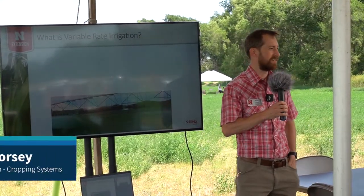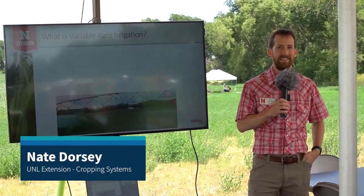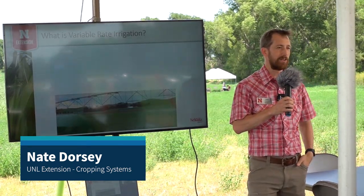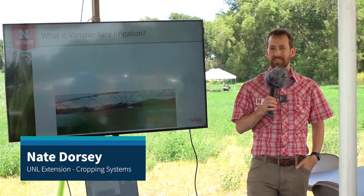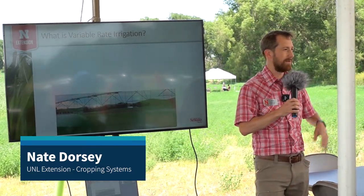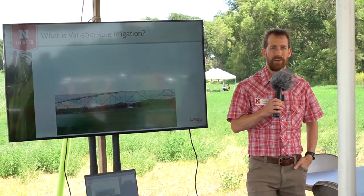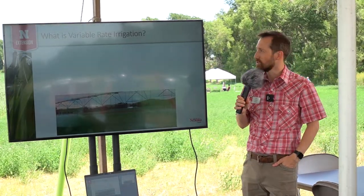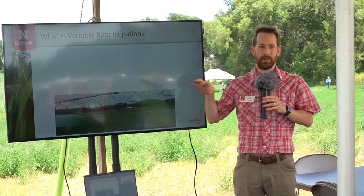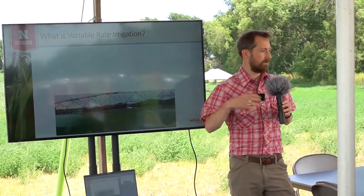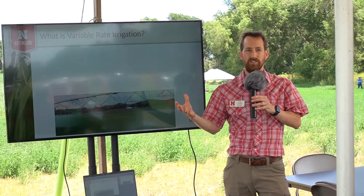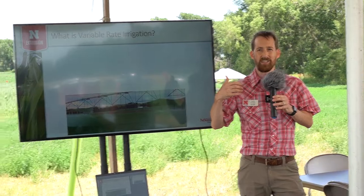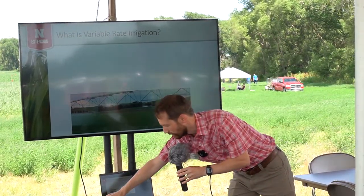My name is Nate Dorsey. I'm an Extension Educator with the University of Nebraska, based in Fremont, covering both Dodge and Washington County. I have a background working in irrigation technology, so variable rate irrigation is right up my alley — something I've worked with quite a bit over the years. I'm excited to talk about how we can use remote sensing and drones to generate variable rate prescription maps that we can send to center pivot irrigation machines to execute in the field.